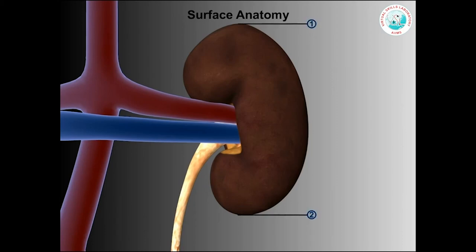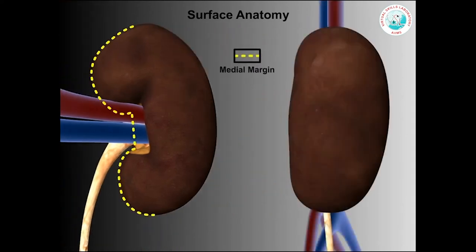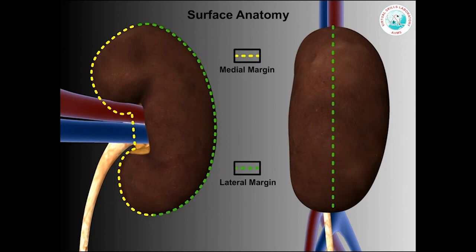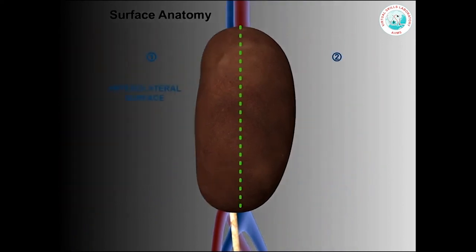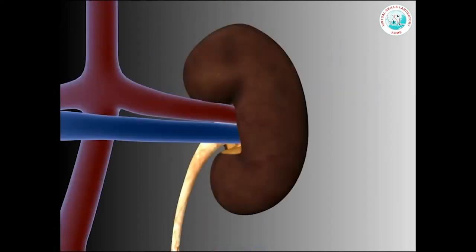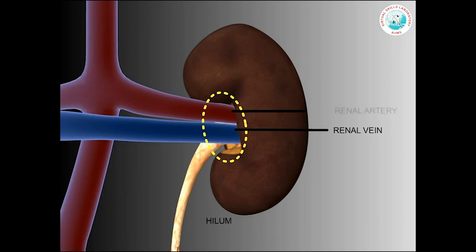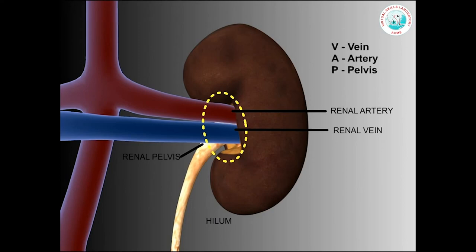It has two poles — the superior pole and the inferior pole — two margins — medial margin and lateral margin — and two surfaces — the anterolateral surface and the posteromedial surface. At the concave medial margin is a vertical cleft, the hilum, which is the entrance to the renal sinus. At the hilum, we see the renal vein, which is anterior to the renal artery, which is anterior to the renal pelvis. So we can remember it as VAP from anterior to posterior: vein, artery and pelvis.